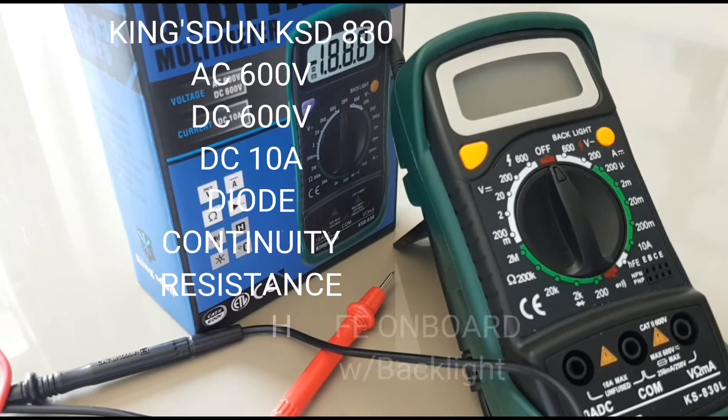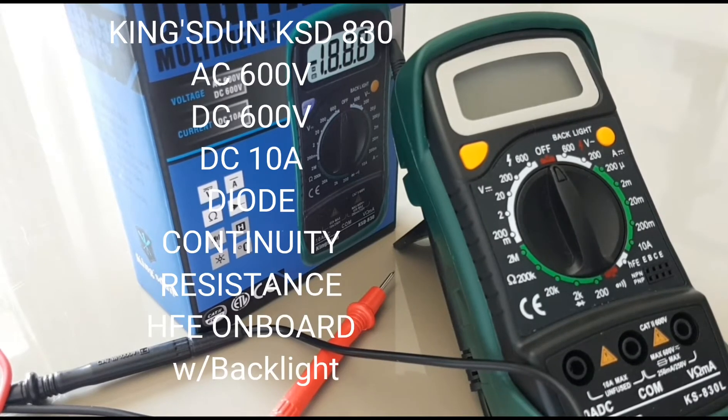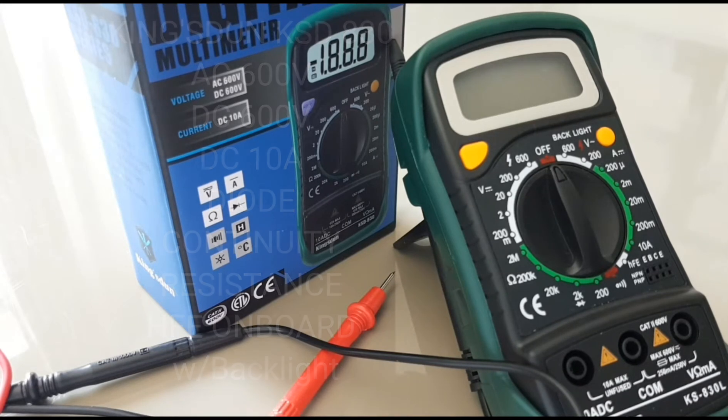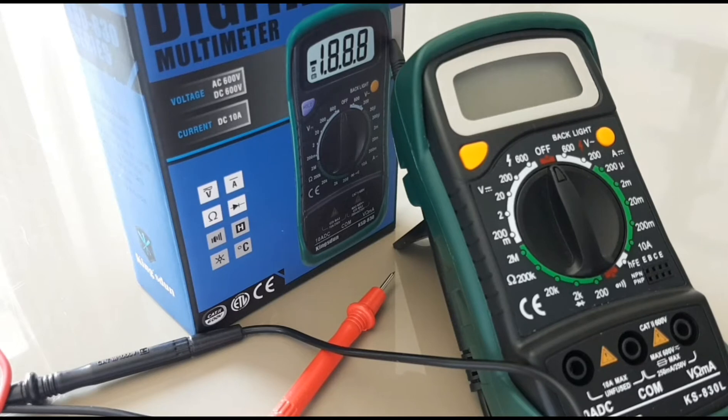Hey everybody, welcome back to another cheapo meter review. Today we're looking at the, and you know it's my favorite, the Kingston Digital Multimeter, the KS-830 series. This is a no-holds-barred, really basic, non-auto ranging multimeter.